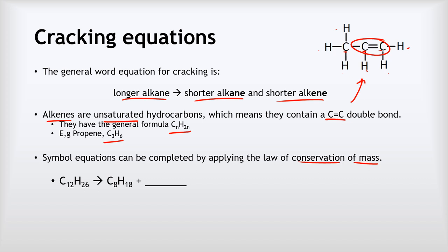Let's look at some examples. Imagine you start with C12H26, it undergoes cracking, and produces C8H18 and some other substance — what is that? Using conservation of mass: starting with 12 carbons, we must finish with 12 carbons, so we do 12 minus 8 to give us four carbons in the final substance. And for hydrogen: 26 minus 18 gives us eight hydrogens. So the unknown substance is C4H8. We can also identify which is the alkane and which is the alkene: for C4H8, n is 4 and the hydrogens are 2 times 4, satisfying CnH2n — so that's the alkene. For C8H18, 2 times 8 plus 2 is 18, so that's the alkane.